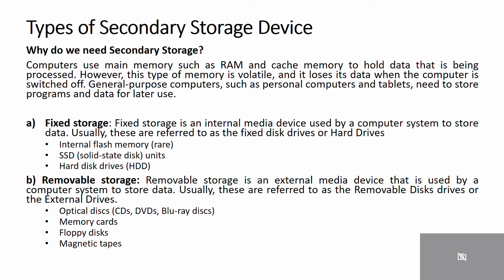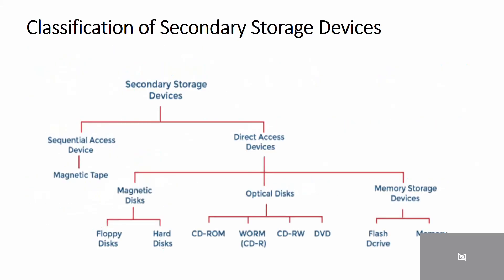Removable storage refers to external media devices used by a computer system to store data, usually referred to as removable disk drives or external drives. Examples include optical disks like CDs, DVDs, and Blu-ray discs, memory cards, magnetic tape, and similar external storage media. Now we move to the next slide: classification of secondary storage devices.